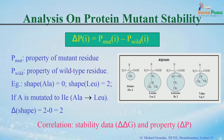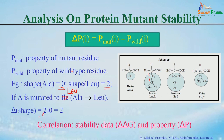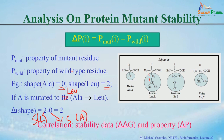For example, take the property 'shape', which indicates branching. Leucine has a shape value of 2, and alanine has a shape value of 0. If alanine is mutated to leucine, then delta shape equals shape of leucine (2) minus shape of alanine (0), which equals 2.